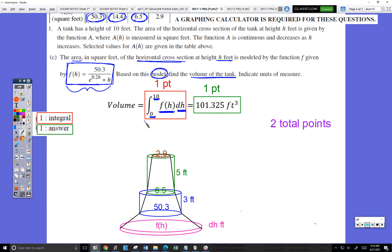So all I need is this integral. That's one point. Type it in my calculator correctly, round correctly to three decimal points, and I'll get the second point. Don't forget your units. That's part of that second point right here. So two points total.